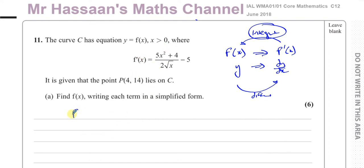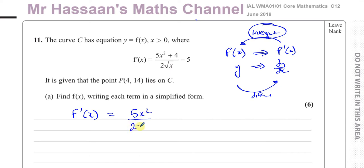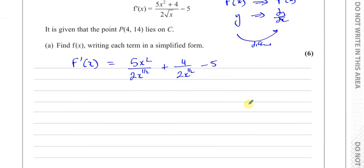So we have to integrate this. First we need to write f dash of x in a form which is easy to integrate — the same kind of procedure as preparing something for differentiation. We separate them out as separate terms, with one power of x on the numerator. So I can write this as 5x squared over 2x to the power of a half, plus 4 over 2x to the power of a half, then minus 5 at the end. I'm just getting it ready for integration.